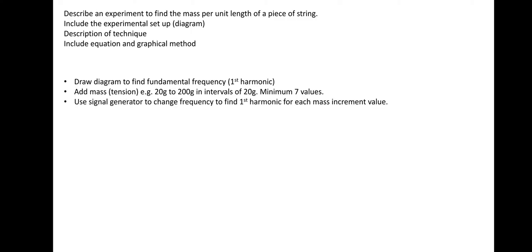So you draw a diagram to find the fundamental frequency of the first harmonic. That's important. That's forgotten with this equation that the frequency is the fundamental frequency. So please remember that. Add mass and tension. So examples, which I haven't touched on, but could be between 20 to 200 grams in intervals of 20 grams. Just make sure that you've got a minimum of seven values. You don't want to do tension of 20 and 25 and that's it, and then try plotting a graph with two data points. If we go for seven values, that's okay. There's no point in adding masses greater than 200 grams in this type of experiment with a piece of string.